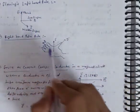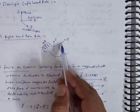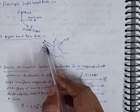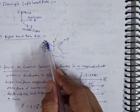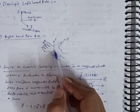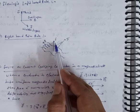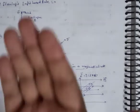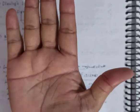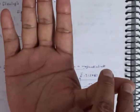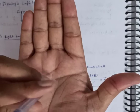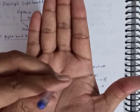Second is the Right Hand Palm Rule: in the right hand, the thumb represents the direction of the current, the fingers represent the direction of the magnetic field, and the direction perpendicular to the palm (outward/upward from the palm) represents the direction of the force.